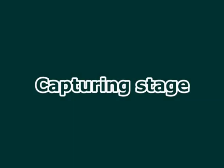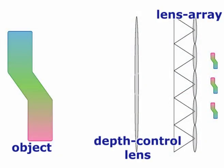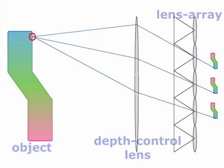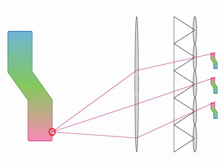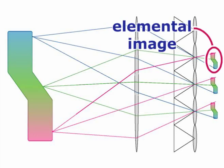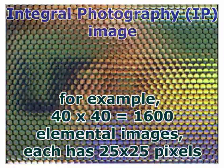Now let me explain the capturing stage. Here is a scene object, the depth control lens, and the array of lenslets. Each lenslet forms an image of the object — we call this an elemental image. LEAFLIT can capture over 40 by 40 elemental images, each having about 25 by 25 pixels.